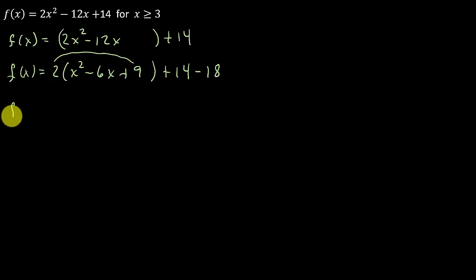Alright, so now I've got f(x) is equal to 2 times, and that's going to be x minus 3 squared, that factors, minus 4. Okay, so now I'm going to take the inverse of this thing.